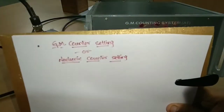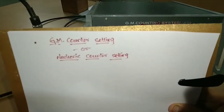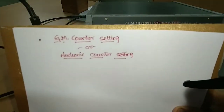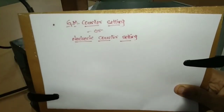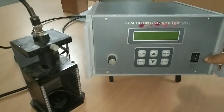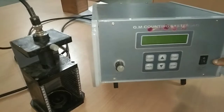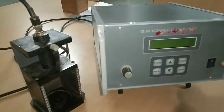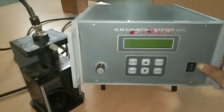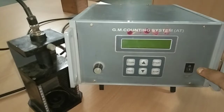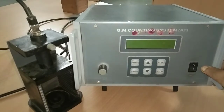Now we move to GM counter settings, also called nucleonic counter settings. Before taking readings, some initial programming settings must be fulfilled. Until those settings are completed, we cannot obtain valid readings.